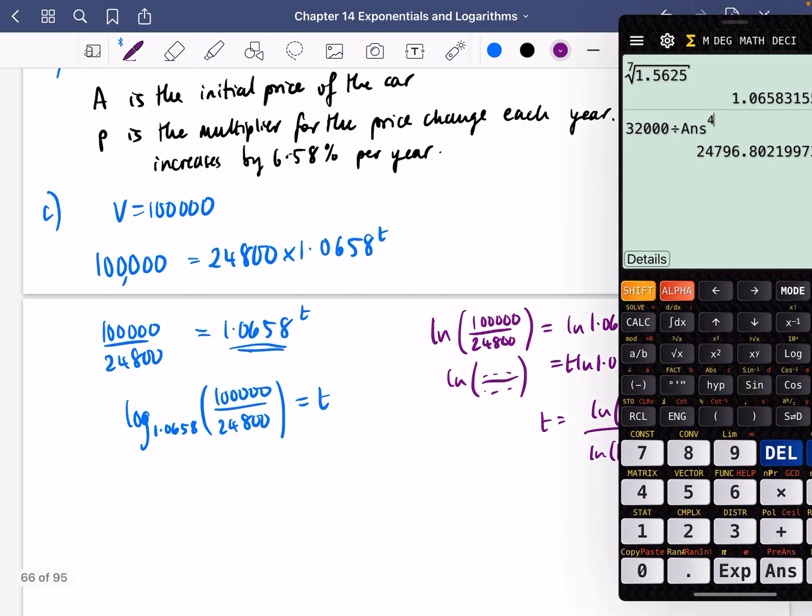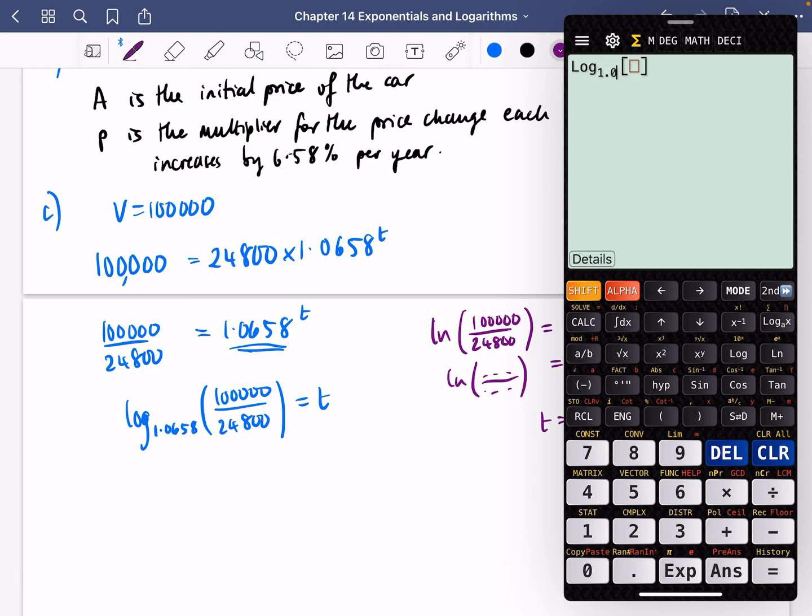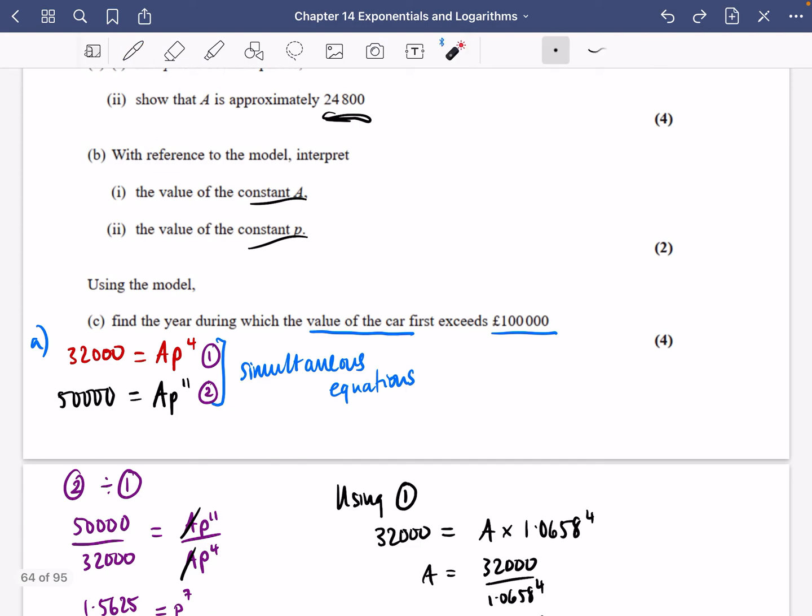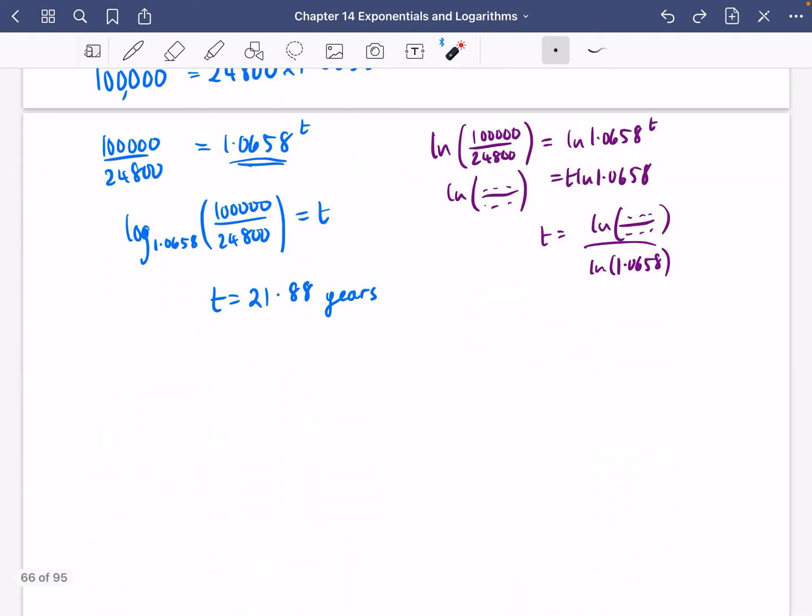I'll use the blue method. Log base 1.0658 of (100,000/24,800) gives t = 21.88 years. It says find the year during which the value first exceeds £100,000. It's £100,000 when t = 21.88 years.